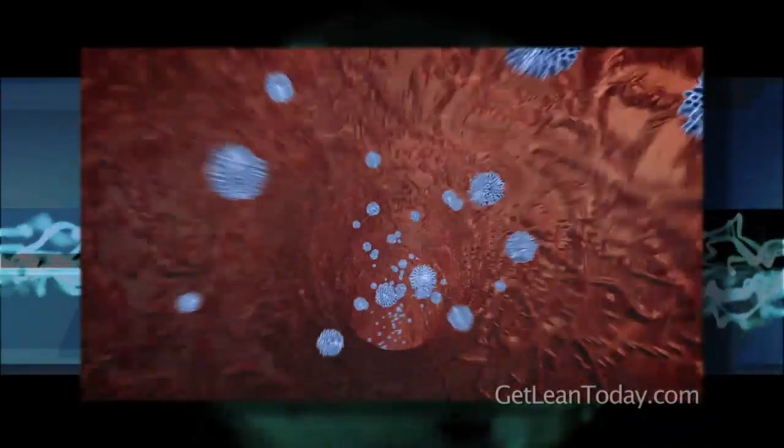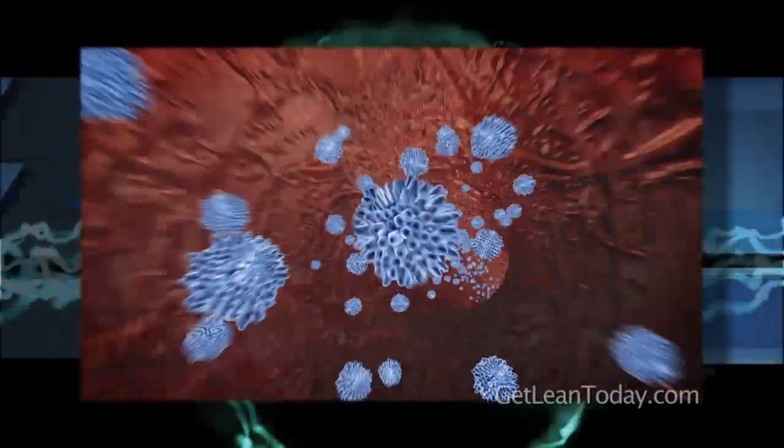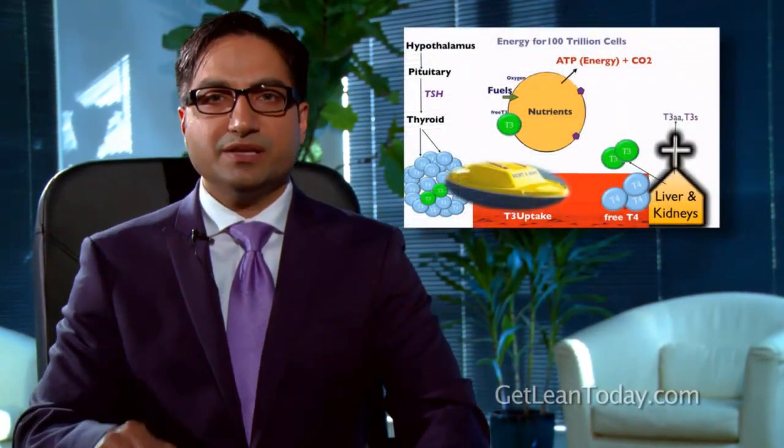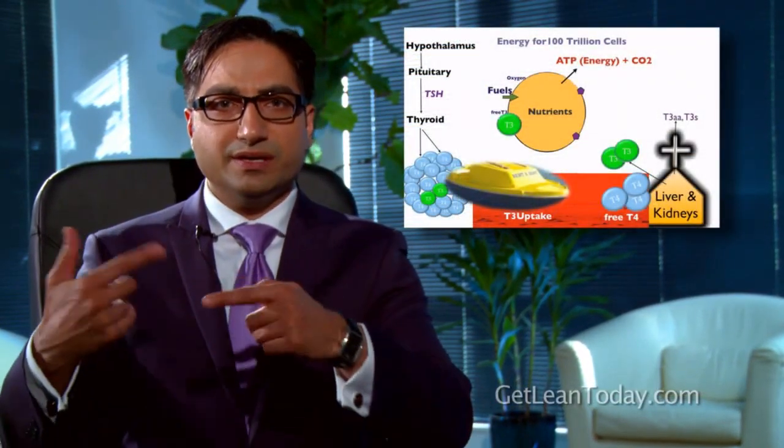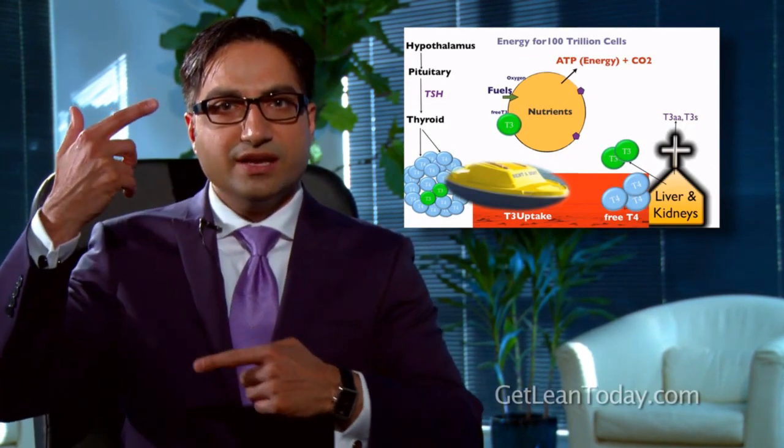When the pituitary gland stimulates TSH — thyroid stimulating hormone — it goes through the bloodstream to the thyroid gland and tells the thyroid cells that we need to make some thyroid hormone. Most of what is made there is T4, which is considered a very inactive hormone, and it does make some T3 as well.